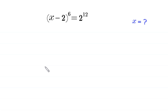Hello, welcome to how to solve this very nice algebra equation. (x minus 2) whole to the power 6 is equal to 2 to the power 12. We need to find all possible values of x.